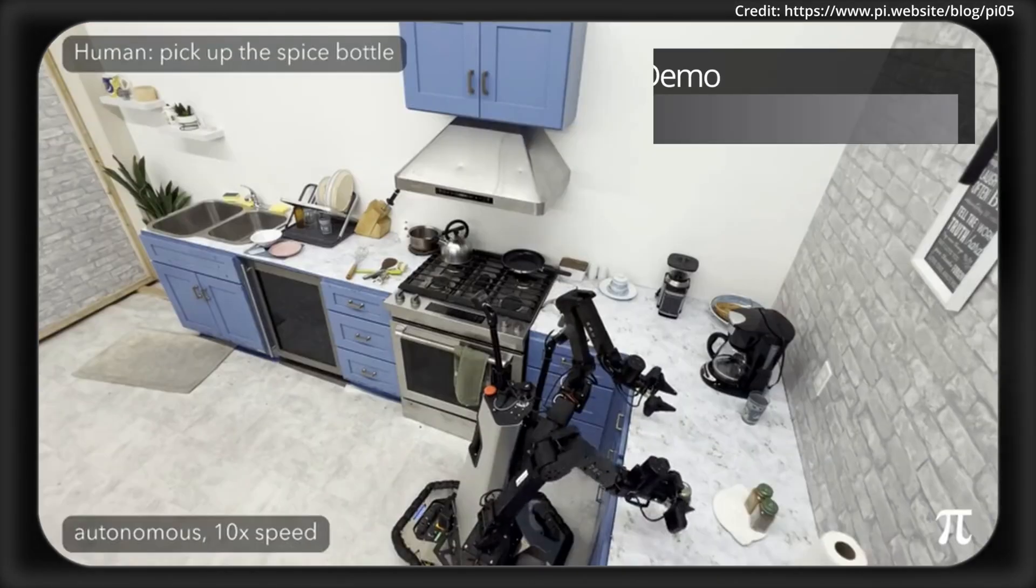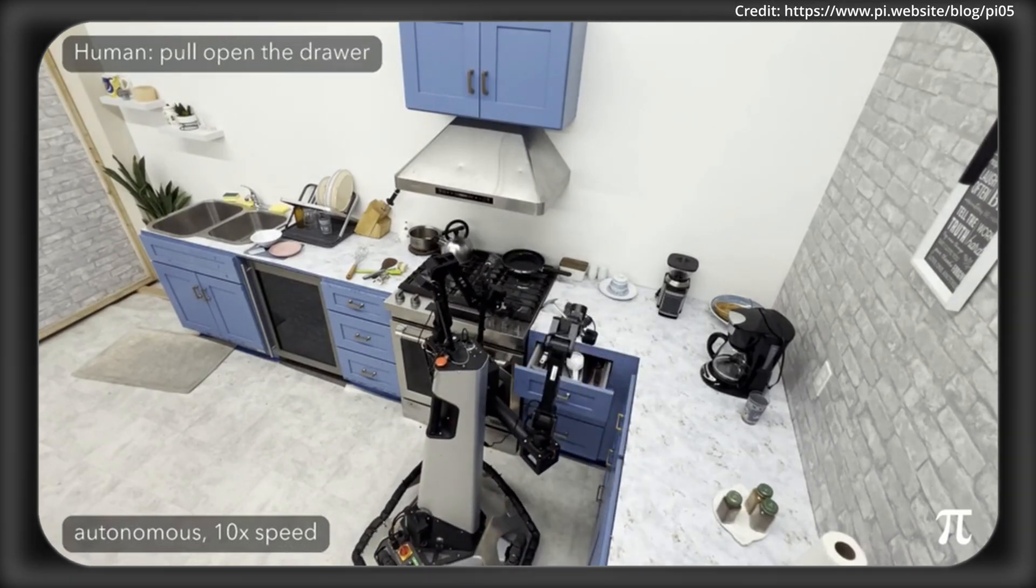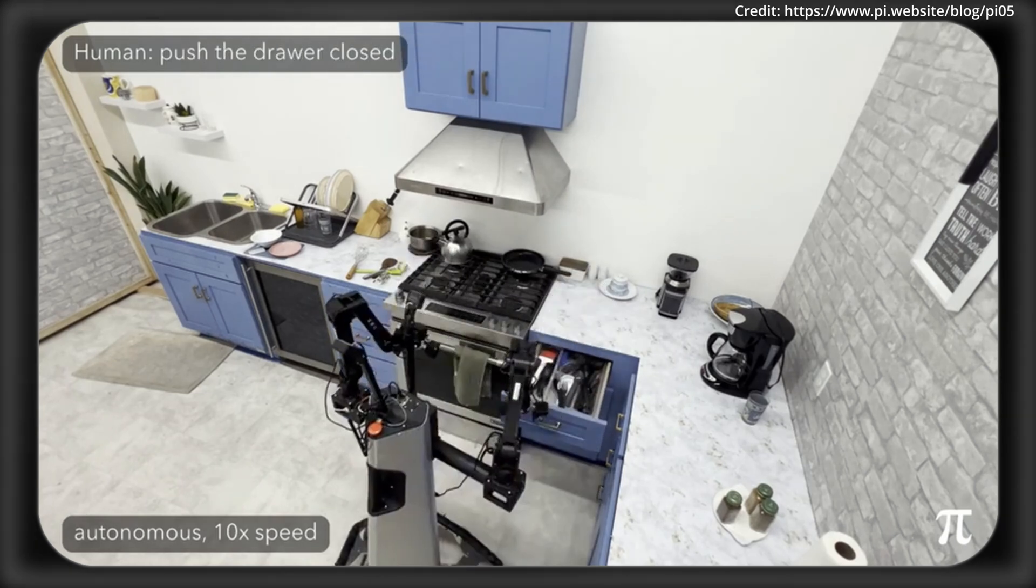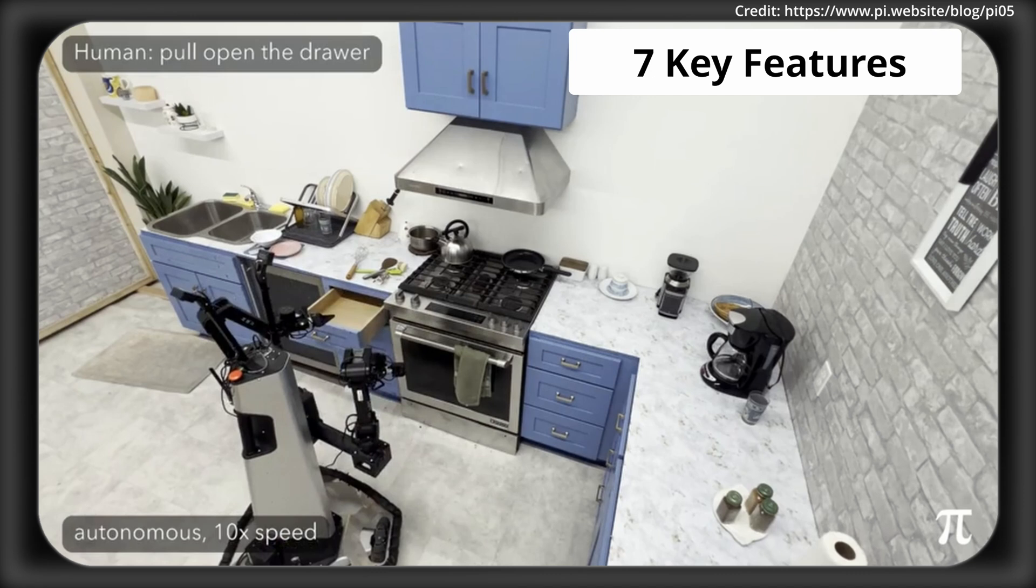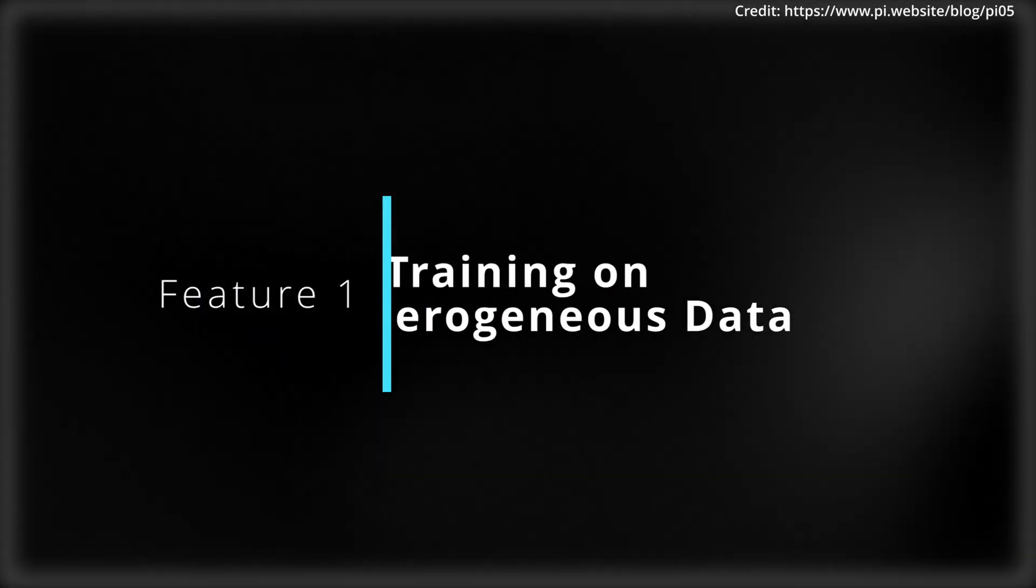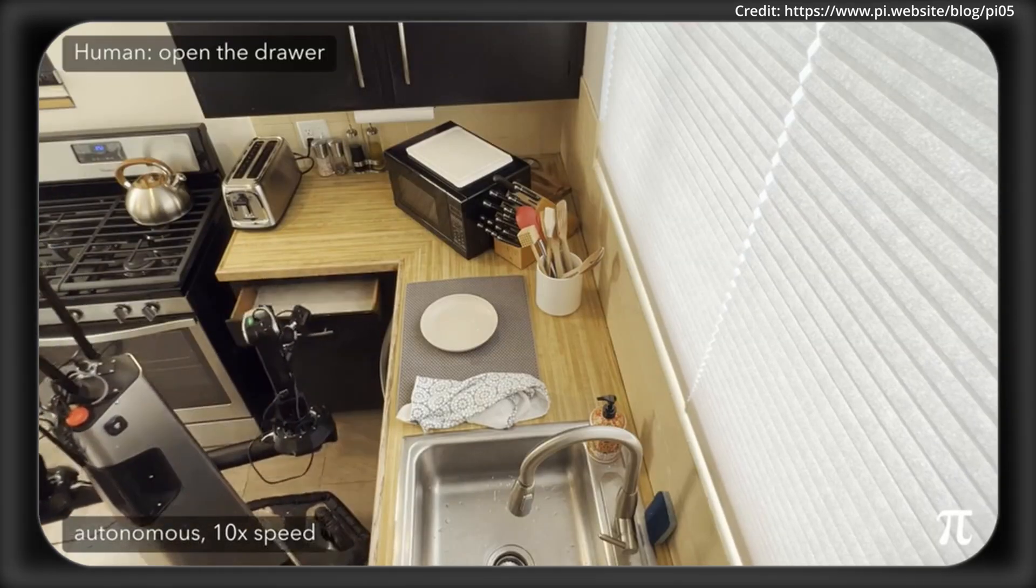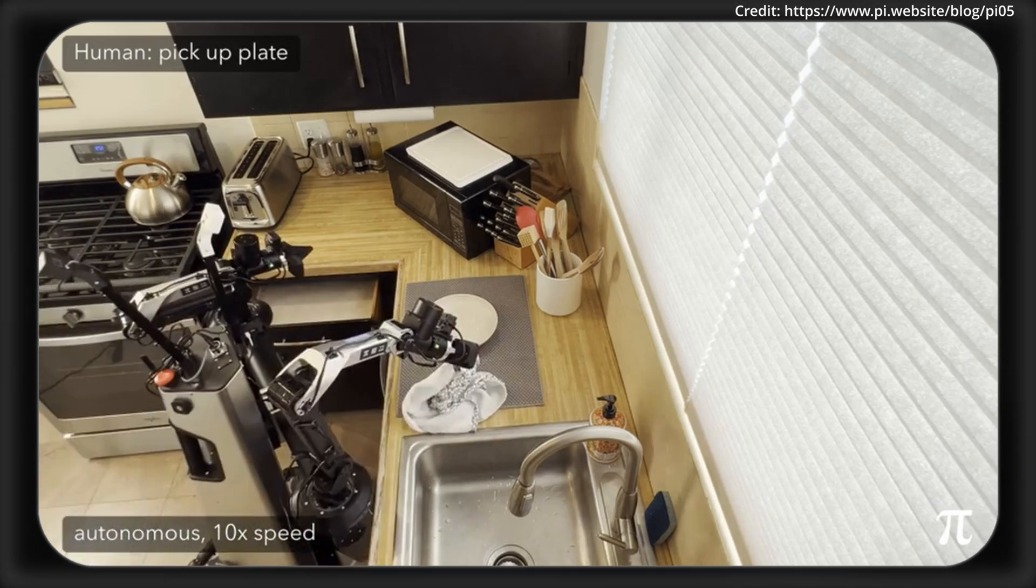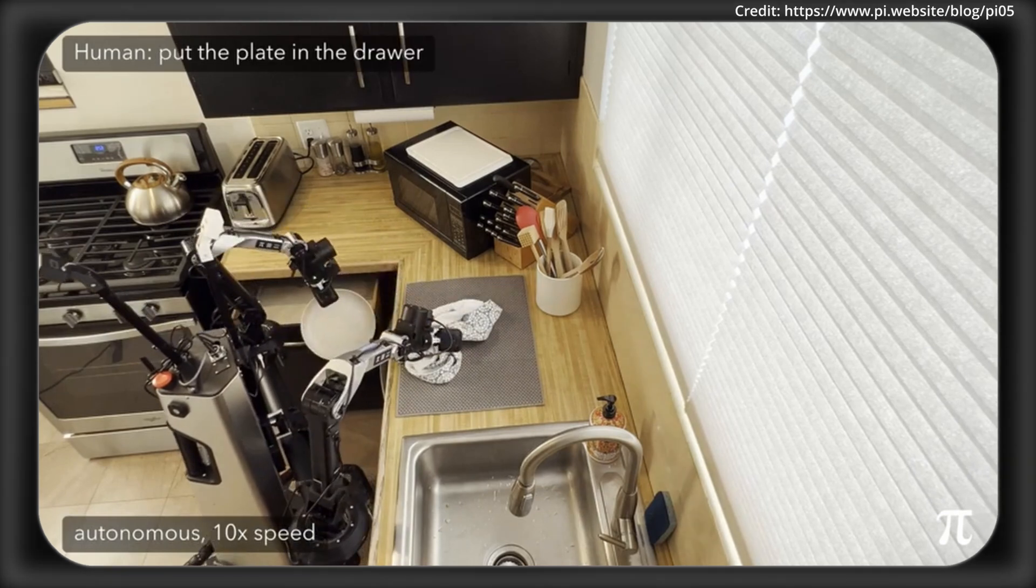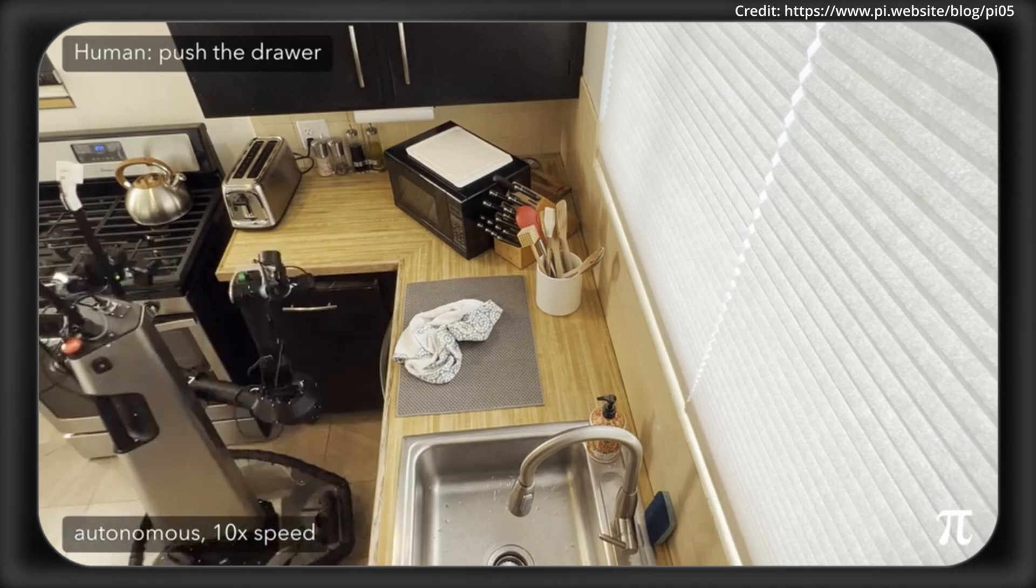But I'm about to walk you through the seven features that make this all possible because the problem before this was that there wasn't enough training data to be able to actually make these things work. So now that you've seen some basic demos, I'm going to walk you through the seven key features that allow this robot to generalize in this way, starting with feature one which is co-training on heterogeneous data. So Pi.5 learns from all different types of data sources and these include web data like image captioning and object detection as well as verbal instructions from humans, and this co-training teaches the robot not just how to move its arms but also how to understand the context of a task.